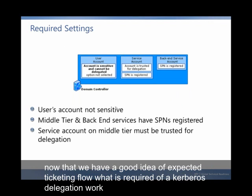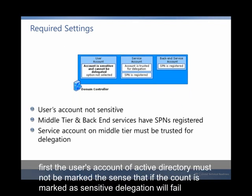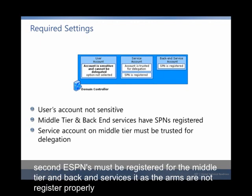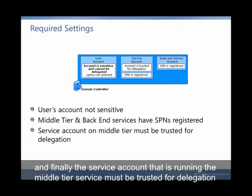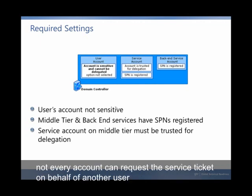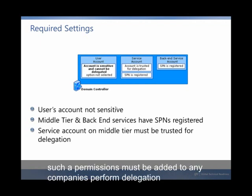Now that we have a good idea of the expected ticketing flow, what is required to make Kerberos Delegation work? First, the user's account in Active Directory must not be marked as sensitive — if the account is marked as sensitive, delegation will fail. Second, SPNs must be registered for the middle tier and back-end services; if SPNs are not registered properly, Kerberos authentication will fail. And finally, the service account running the middle tier service must be trusted for delegation. Not every account can request a service ticket on behalf of another user, so special permissions must be added to any account that needs to perform delegation.